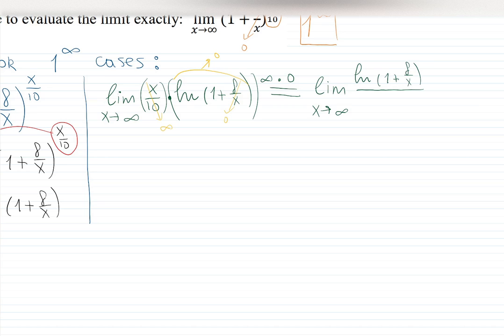I will have natural log 1 plus 8 over x all over, you can do x over 10. But you know what? I just realized that this x over 10 is a silly part. Why do we have to have 1 over 10 everywhere? Let's have x and then 1 over 10 outside. Then I will just multiply the result by 1 over 10. Let's make life easier. Then in the denominator, we're going to have a function 1 over x.